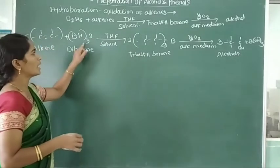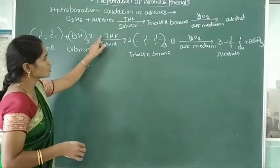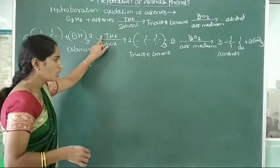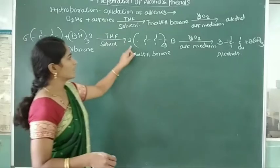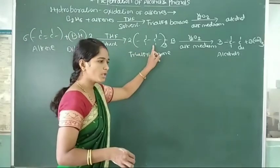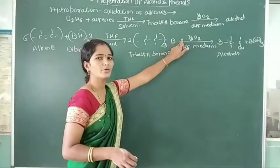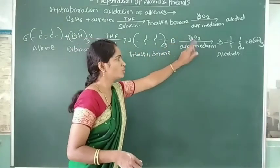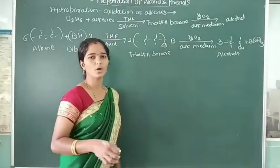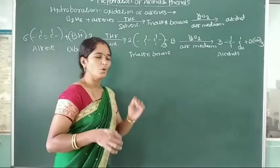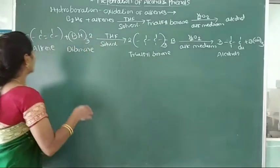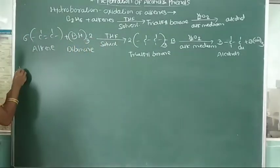Six molecules of alkene react with diborane in presence of solvent to give trialkyl borane, which is then oxidized with hydrogen peroxide to give formation of alcohols. We see one example — suppose we take propene: CH3-CH=CH2.